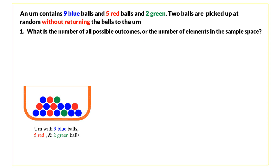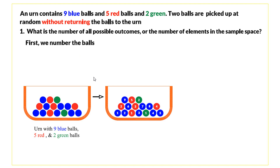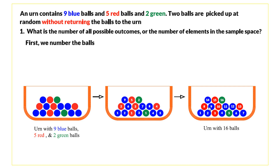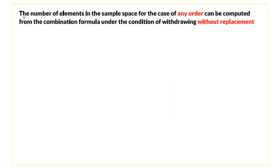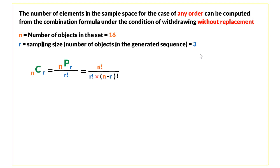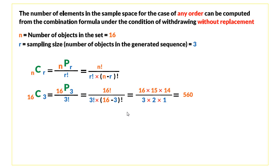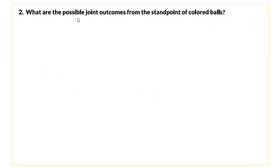The first thing we do is number the balls — blue balls from one to nine, red balls from one to five, and green balls from one to two. The number of elements in the sample space for the case of any order can be computed from the combination formula under the condition of withdrawing without replacement. We have 16 objects and a sampling size of 3, giving C(16,3) = 560 possible outcomes.